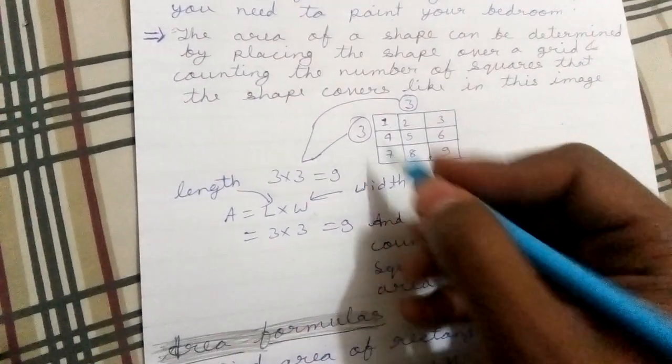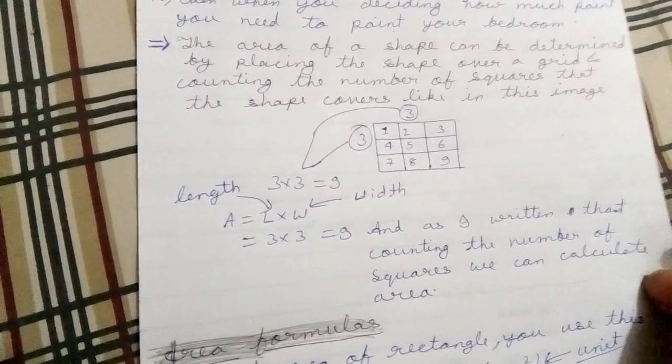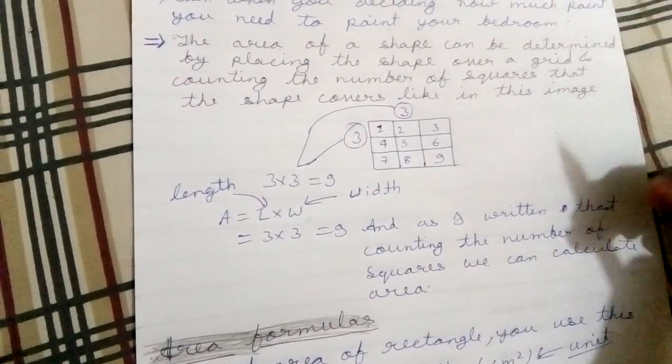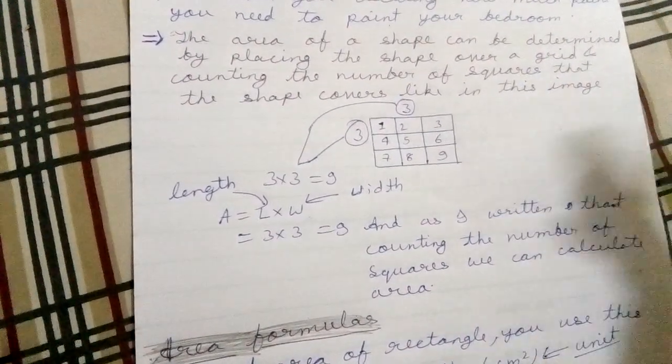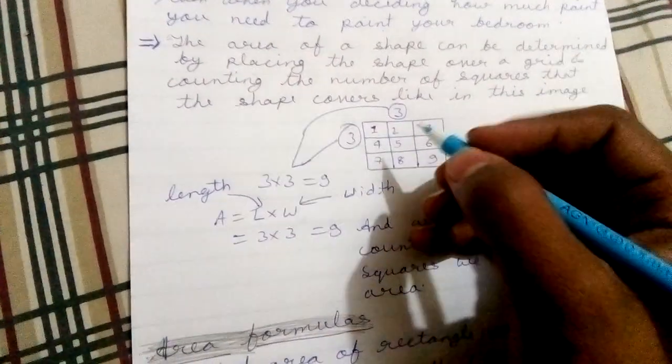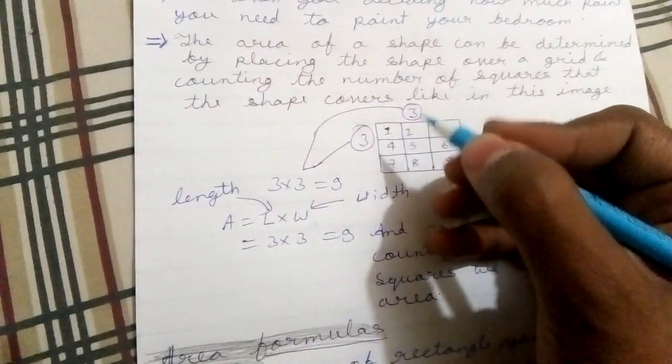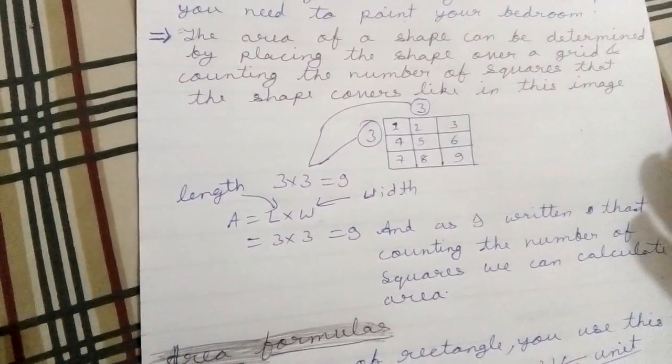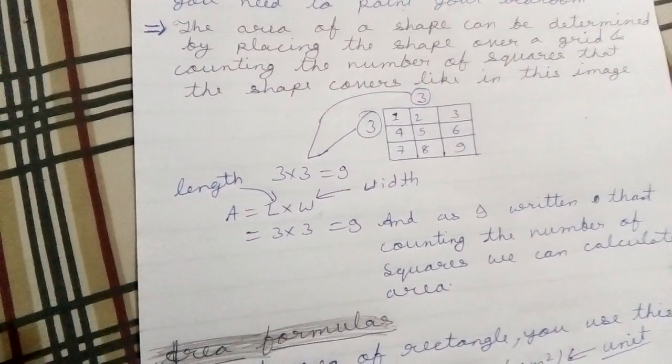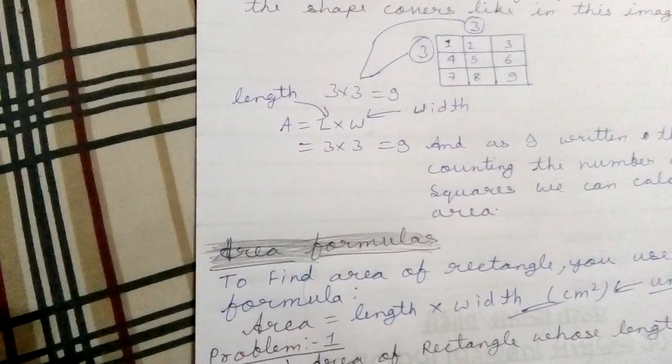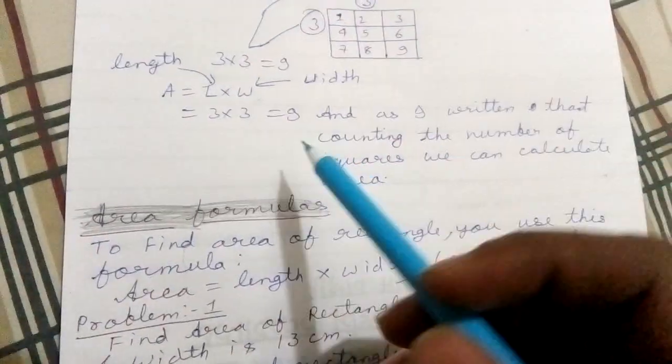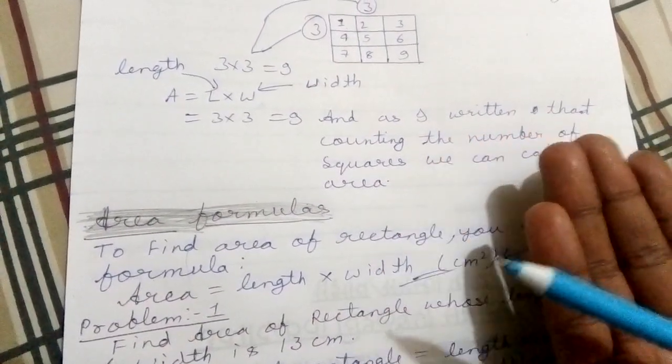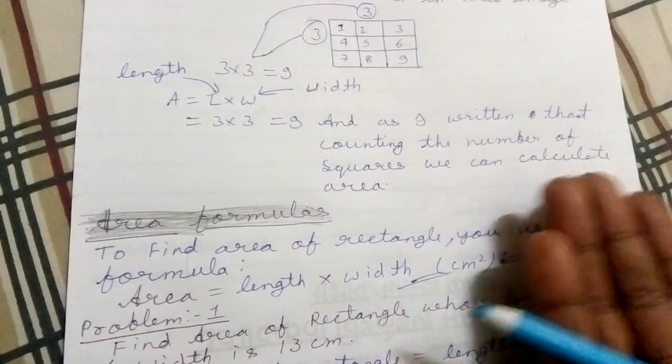As we will calculate the area, 3 into 3, these 3 centimeters and this 3 centimeters, so total equals 9 centimeters. Like this, painters will divide your building wall or other things. By counting the number of squares we can calculate area.